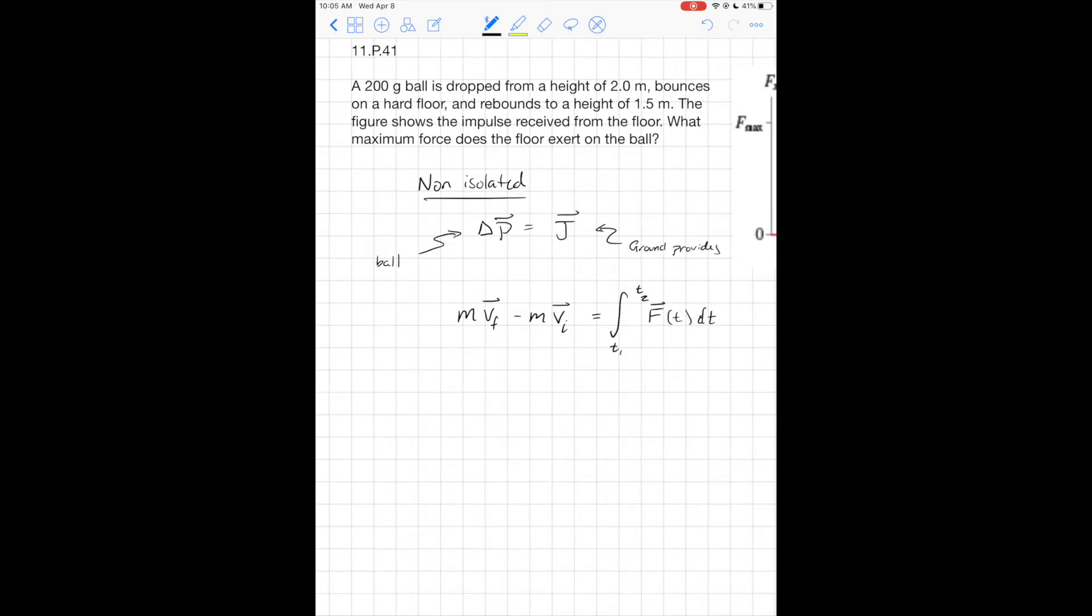So what I have here is mgh equals one half m v squared for our kinetic energy. Masses are going to be canceling, and so my velocity is going to be square root of 2gh.